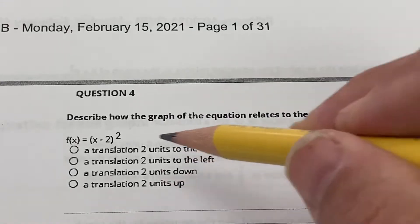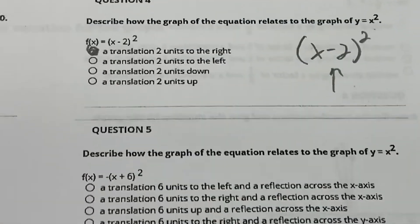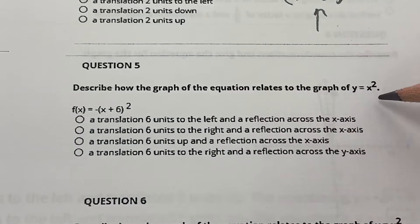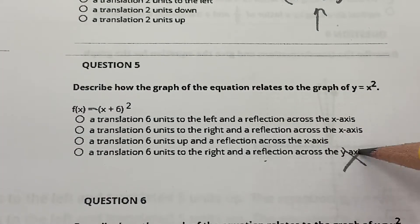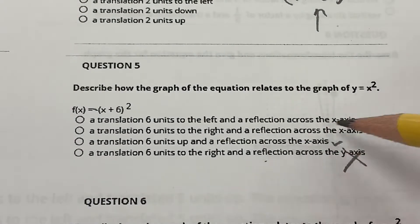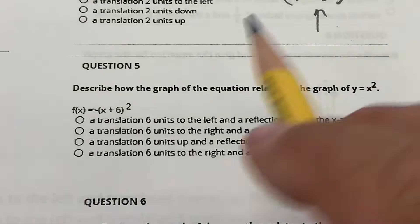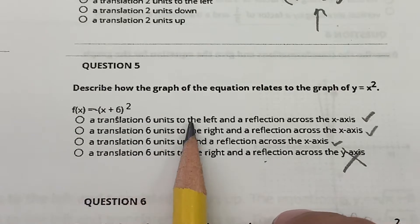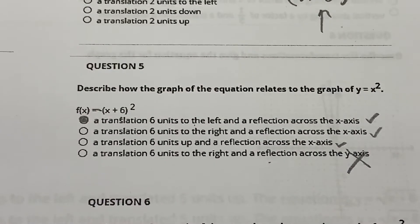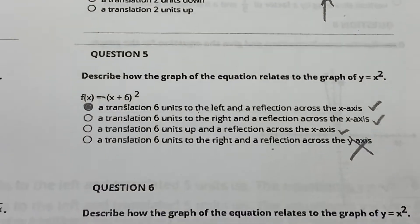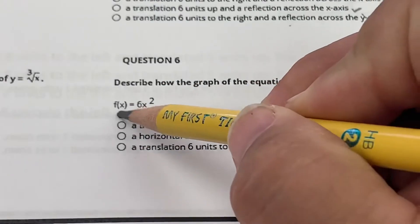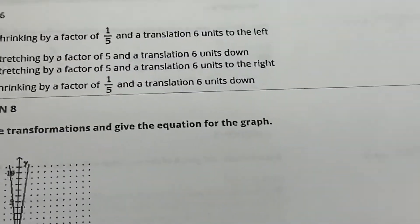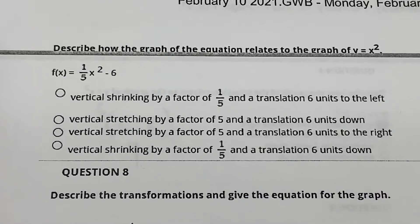Number 5 is x² with a negative out front, so that's a reflection across the x-axis. Then it goes left 6, so that's a translation 6 units to the left — choice A. It's the opposite when the number is inside the function notation, but this 6 is not inside the quantifier.